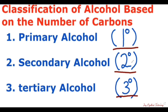When it is secondary, the carbon bearing the OH group will be attached to two other carbons, and if it is tertiary, the carbon bearing the OH group will be attached to three other carbons. That is why these degrees are used to represent them — one carbon, two carbons, and three carbons.